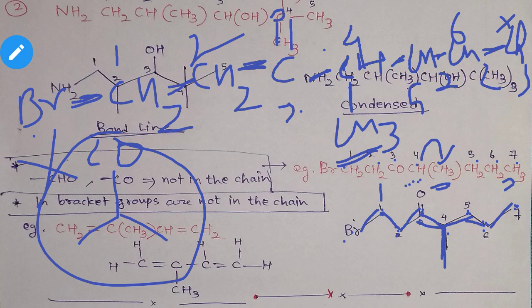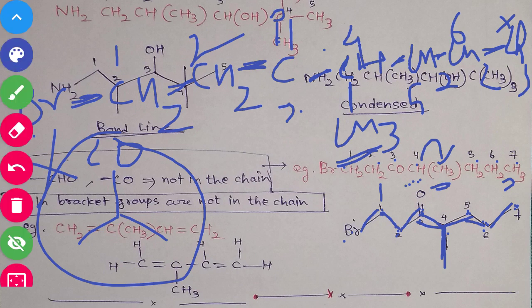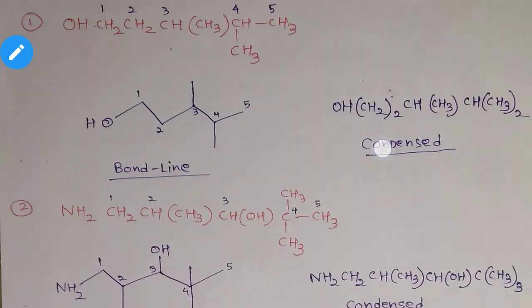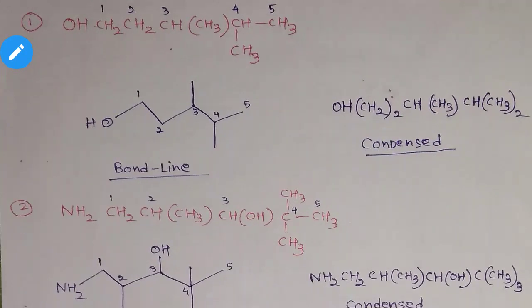Some students wrote CO as a separate group hanging off the chain — that is wrong. The CO carbon is in the chain itself. So in such a way you will make the bond-line formula and the condensed formula — practice as many questions as you can. Whatever mistakes you have done, try to rectify them. These are the basics — if you do not know how to write the structure, you cannot name the structure either, because naming is harder. Watch this video again and again, and if you still cannot do it, ask me personally. Thank you.